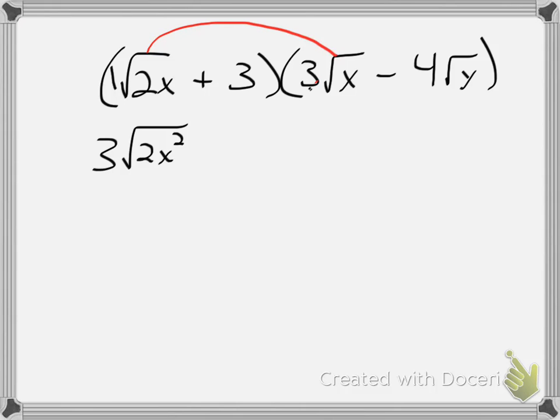Next, I'll say outer, so the square root of 2x times negative 4 square root of y. So we'll say minus 4 on the outside. Inside my radical, 2x times y for 2xy.